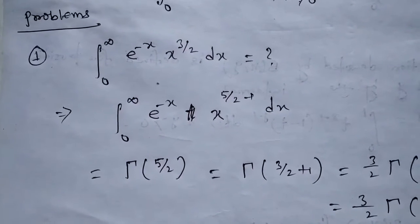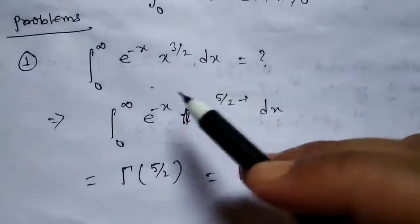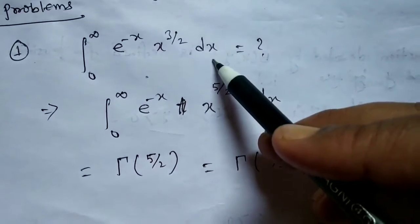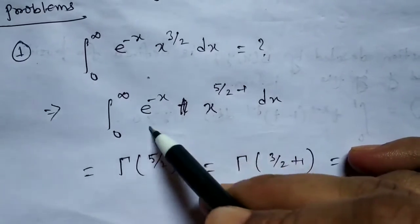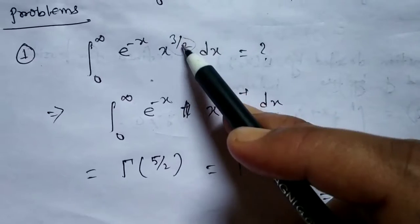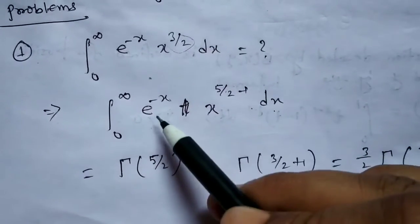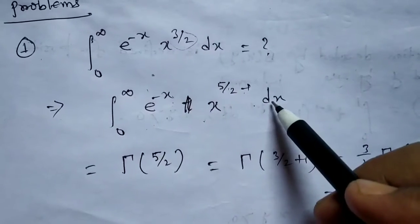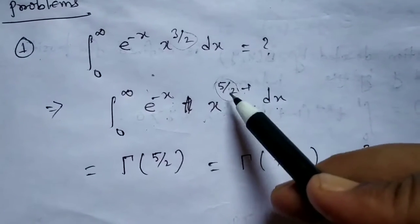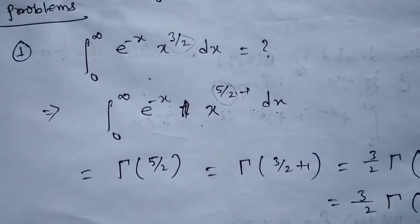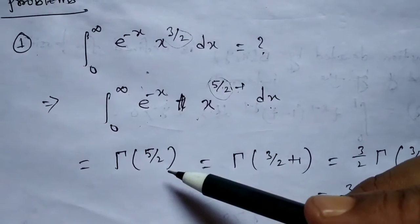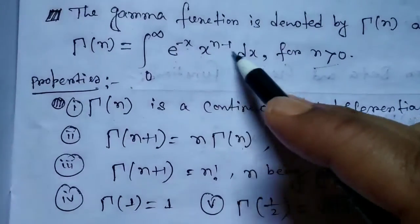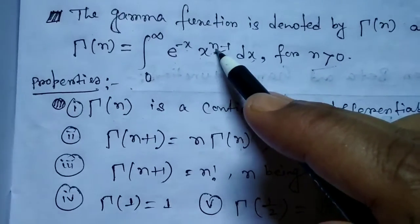Now we consider some important problems on Beta and Gamma functions. Problem 1: What is the value of the integration from 0 to infinity of e^(−x) · x^(3/2) dx? This can be written as integration from 0 to infinity of e^(−x) · x^(5/2 − 1) dx. Since Γ(n) = integration from 0 to infinity of e^(−x) · x^(n−1) dx, this equals Γ(5/2).